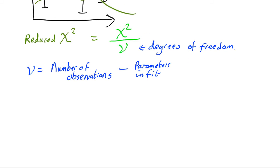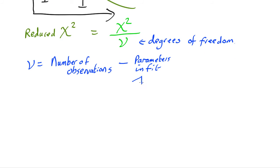What does that mean? If you're fitting let's say a straight line, a straight line is something of the form y equals a plus bx. So to make your fit work you can adjust two things, the intercept and the slope. So that means it's got two fitting parameters.